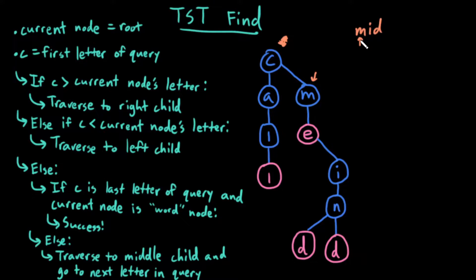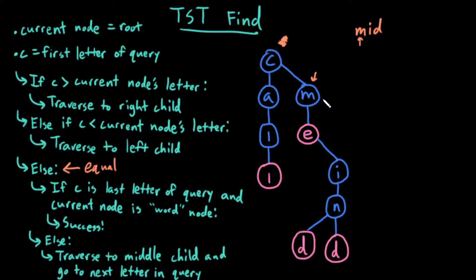So if my current letter is greater than my current node's letter, m is not greater than m, so that's false. Else if m is less than m, because my current node is m — nope, that's also not true. So else, this is the case when they're equal, m is equal to m. If my current letter of my query is the last letter of my query, nope, that's not the case. Else traverse down the middle child and go to the next letter in the query.